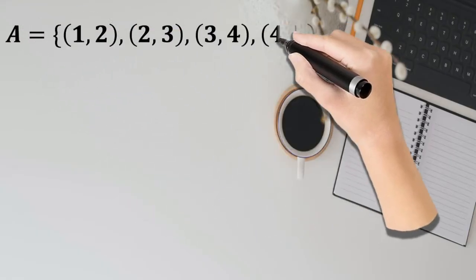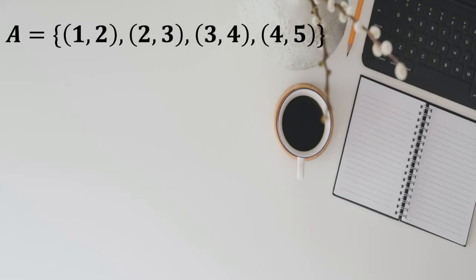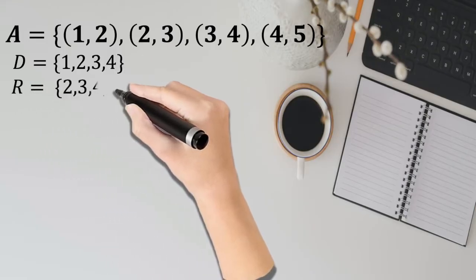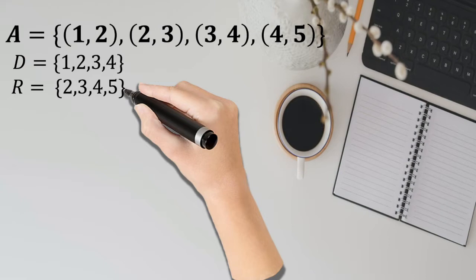Let's give some examples of ordered pairs. So we have set A: (1,2), (2,3), (3,4), and (4,5). Let's get the domain of the set. So we have 1, 2, 3, and 4. Let's also get the range: 2, 3, 4, and 5.